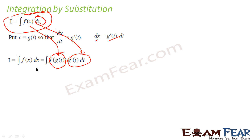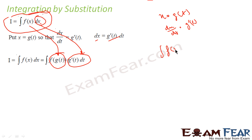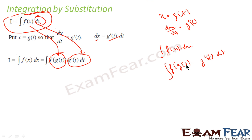So what I have done is replaced x with some function g(t). I get dx as g'(t) dt. The integral of f(x) dx becomes the integral of f(g(t)) times g'(t) dt. These kinds of integrations are a little easier to solve. This is one way — we'll take some examples to understand this.